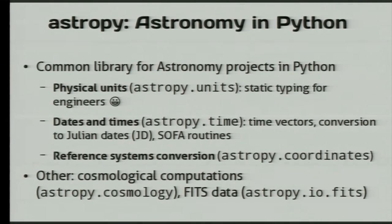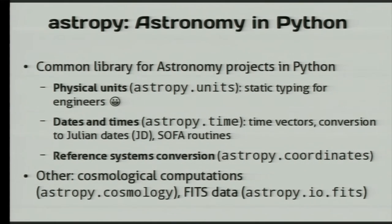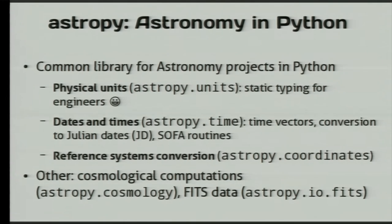It would be impossible without the work of many people. I'm going to talk about a couple of the dependencies. The first one is AstroPy, which is a basic astronomy library written in Python — a joint effort of many developers around the world. It has the very building blocks of any astronomy project, including physical units, which is like static typing for engineers, because if you mix meters with miles, very bad things start to happen. It also handles dates and times, and conversions between reference systems so I can express one position with respect to the Sun, or with respect to the problem, et cetera.